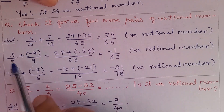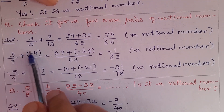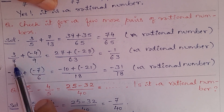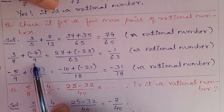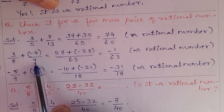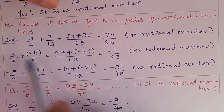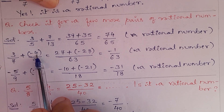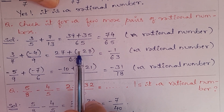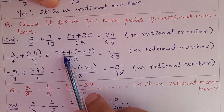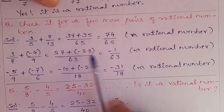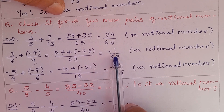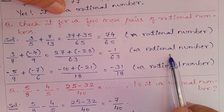A rational number. Now: 3/7 + (−4/9). Take the LCM of 7 and 9, which is 63. Using the butterfly method: 3 × 9 = 27, and 7 × 4 = 28. Since we have plus into minus, it's minus. So 27 − 28 = −1. The answer is −1/63, a rational number.